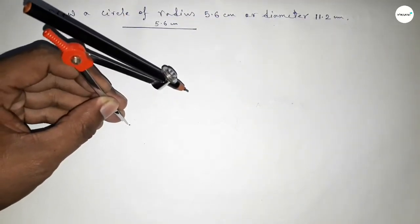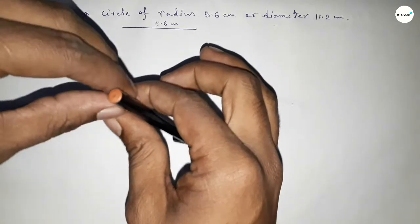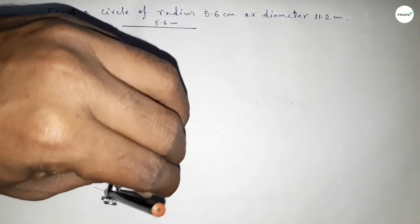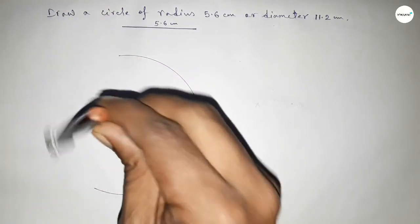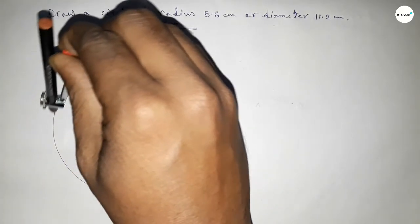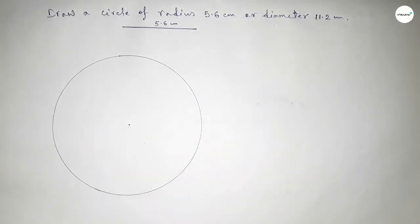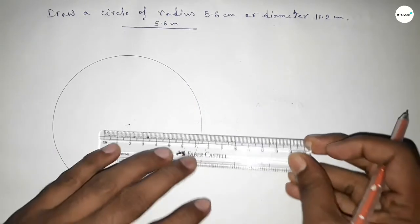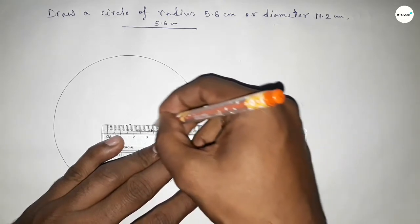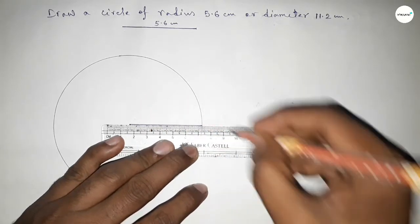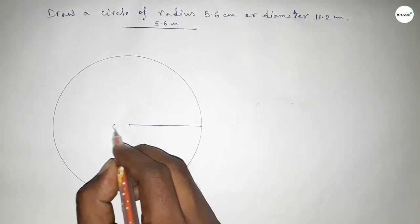Putting the compass on the point, next drawing here an arc by this way, which represents a circle with radius 5.6 centimeter. Now joining this one, and this is the radius of this circle. So taking here center O.